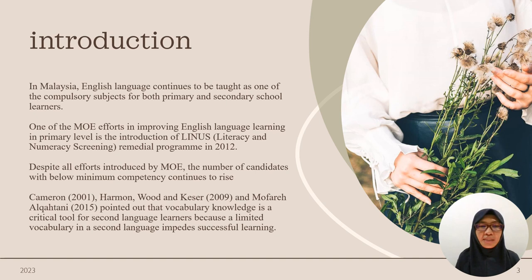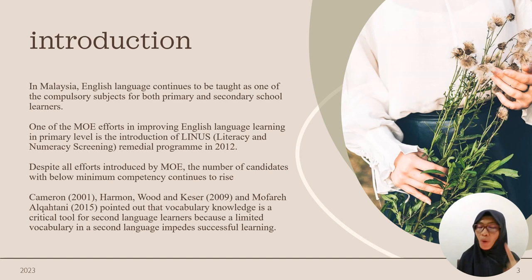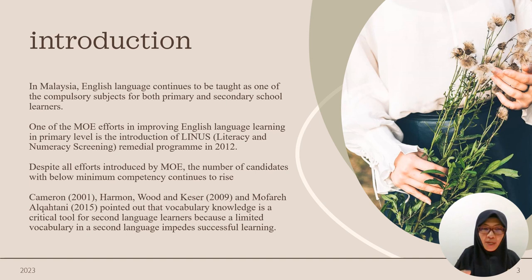In Malaysia, English is compulsory at both primary and secondary school level — students must pass English. There have been many efforts by the Ministry of Education to improve not just Malay language but also English. One of these efforts at primary level is the introduction of LINUS, which stands for Literacy and Numeracy Screening, a remedial program introduced in 2012.